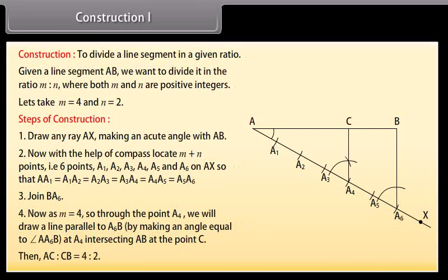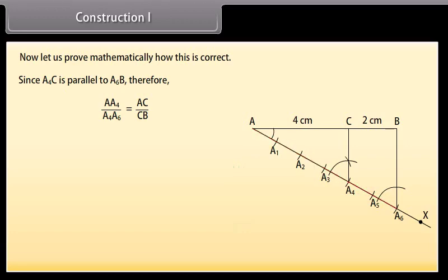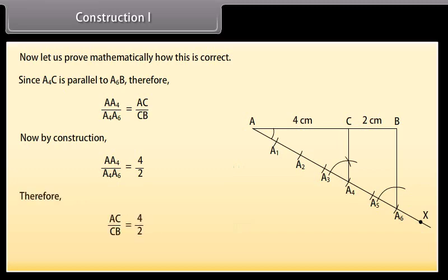Then AC to CB equals 4 is to 2. Now let us prove mathematically how this is correct. Since A4C is parallel to A6B, therefore by the basic proportionality theorem, AA4 upon A4A6 equals AC upon CB. Now by construction, AA4 upon A4A6 equals 4 upon 2. Therefore AC upon CB equals 4 upon 2. This shows that C divides AB in the ratio 4 is to 2.